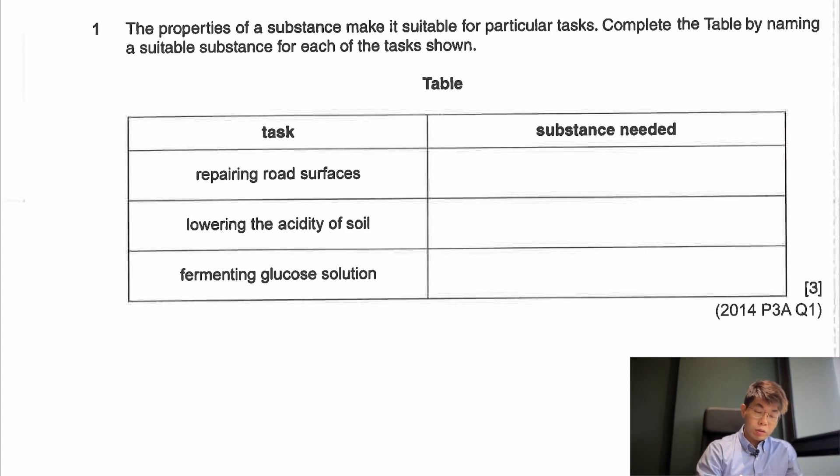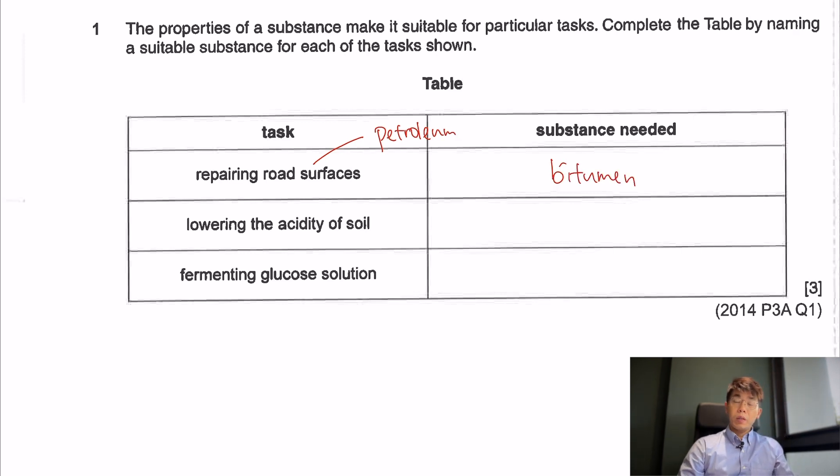Repairing road surfaces - this one actually comes from your petroleum, your crude oil. So this one is your bitumen. Lowering acidity of the soil - this is the one where the farmer, because of acid rain, needs to put something in the soil to make it less acidic, to increase the pH. So this one will be your calcium hydroxide. This is from the acid and base chapter.